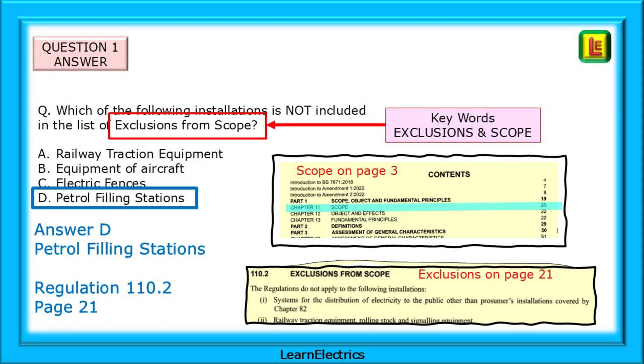The answer is choice D, petrol filling stations. The key words here are exclusion from scope. Looking at page 3, as suggested, we can find the word scope just a couple of lines down and instructing you to go to page 20. The answer is in regulation 110.2 on page 21. It is the only answer choice that does not appear in the list.